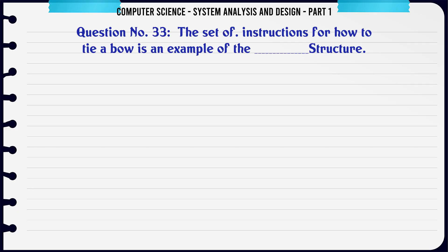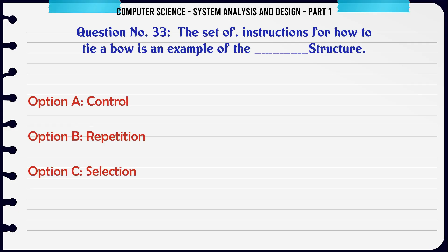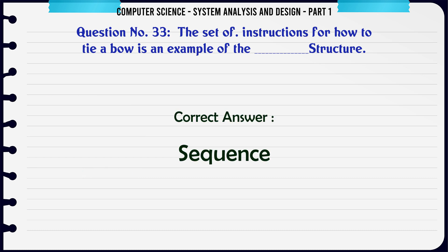The set of instructions for how to tie a bow is an example of the sequence structure: A. Control. B. Repetition. C. Selection. D. Sequence. The correct answer is: Sequence.